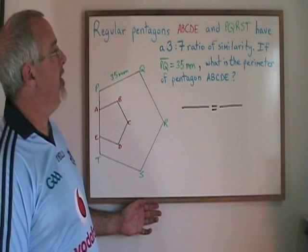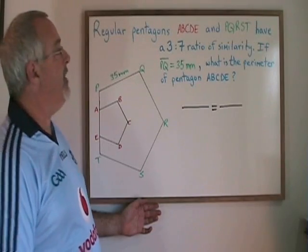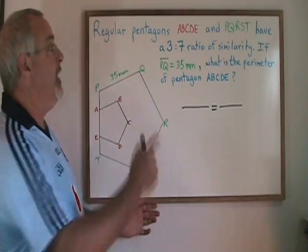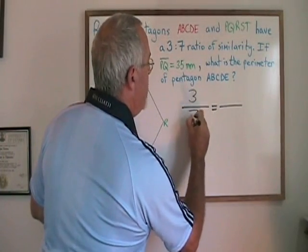We are given two regular pentagons, ABCDE and PQRST, and we are given a ratio of similarity between them. The 3 to 7 ratio of similarity can go right here in my proportion.